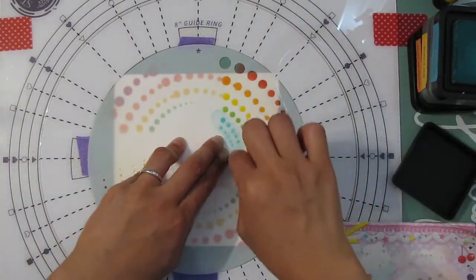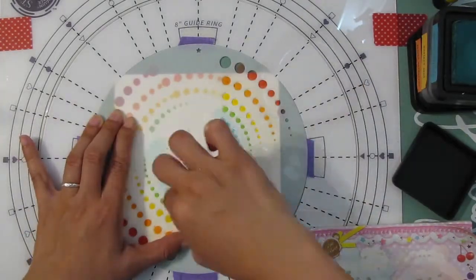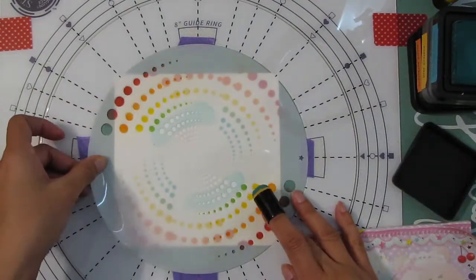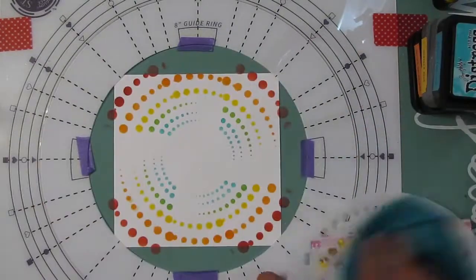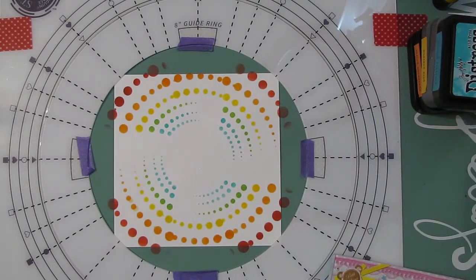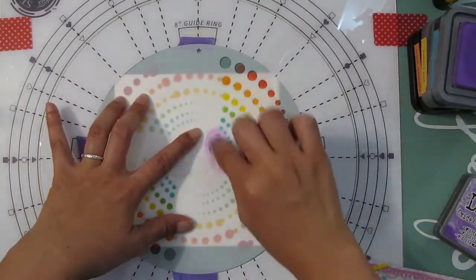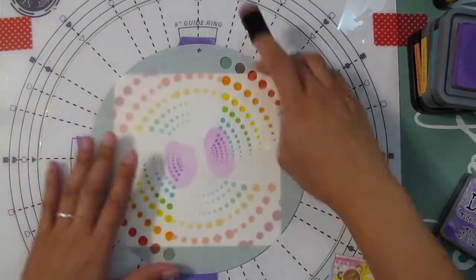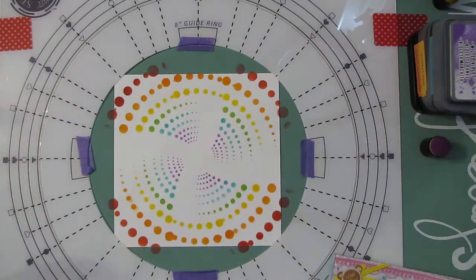Then the next color I went for is Peacock Feathers, and this is a Distress Ink. Here you can see instead of just doing one row of the dotted circles, I went ahead and just applied it to two of the lines. Then lastly I used Wilted Violet in Distress Oxide ink.